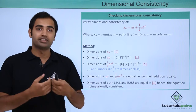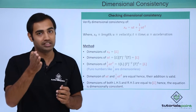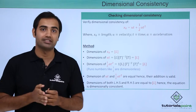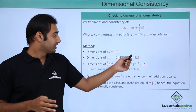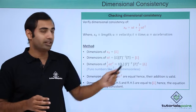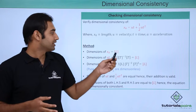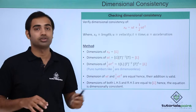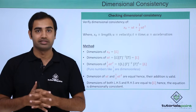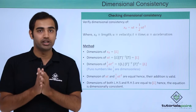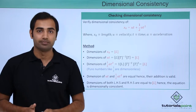L plus L gives another L, just like 5 meters plus 6 meters equals 11 meters. So the final result also has dimension L, meaning the RHS has dimension L. The LHS has L and the RHS also has dimension L, which means this equation is clearly dimensionally consistent. This is a very good way to verify the dimensional consistency of any equation.